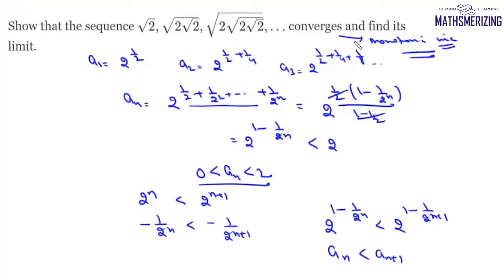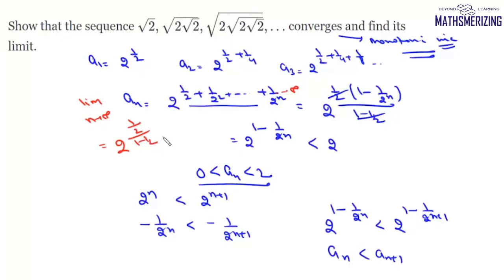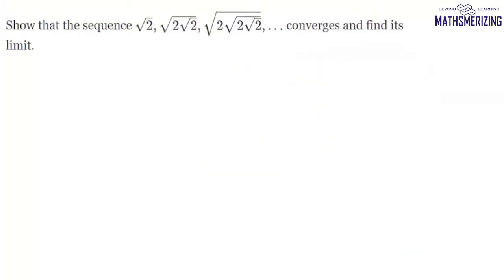Since the sequence is bounded and monotonic, by the Monotone Convergence Theorem we can say the sequence converges. Taking the limit as n → ∞, the exponent becomes an infinite GP with sum a/(1−r) = (1/2)/(1/2) = 1, so the limit is 2¹ = 2. The sequence converges to 2.